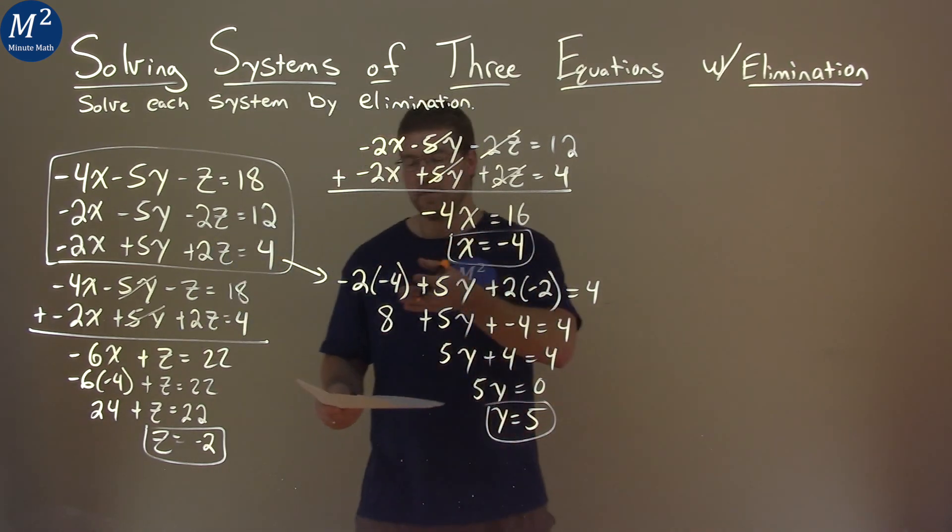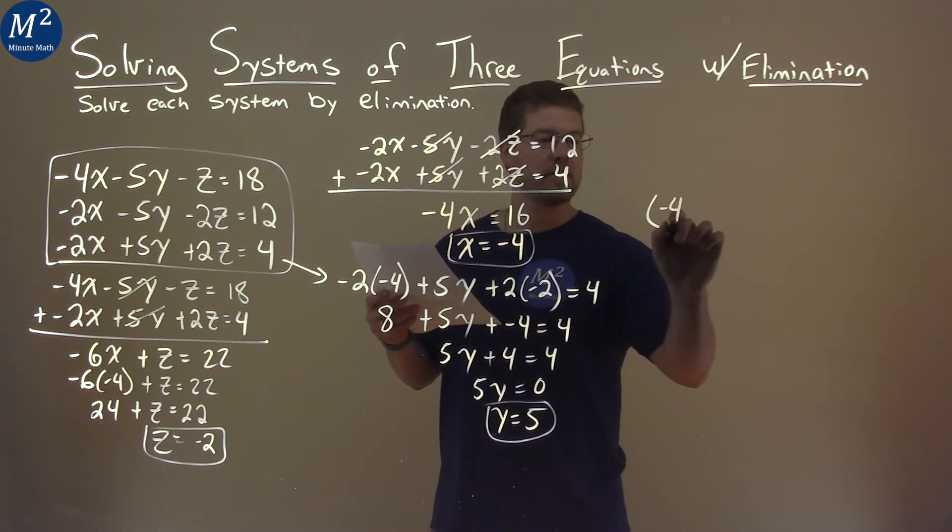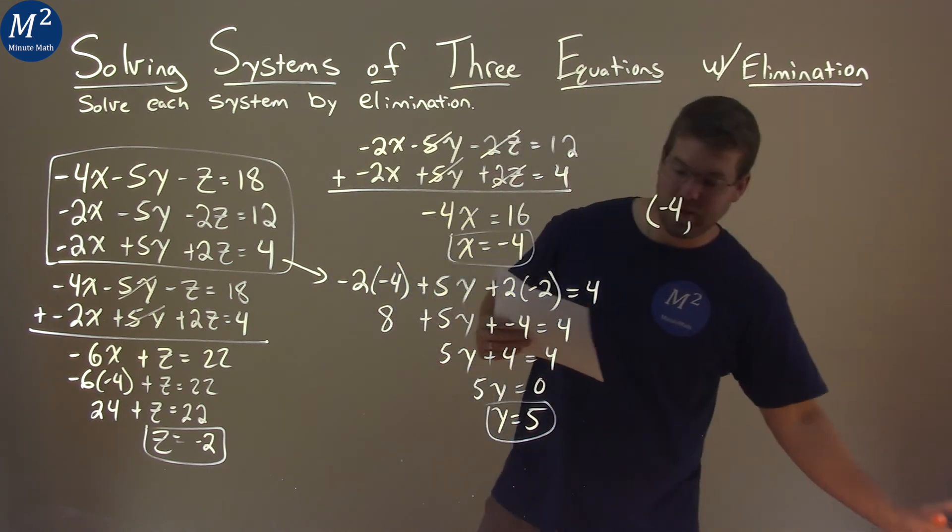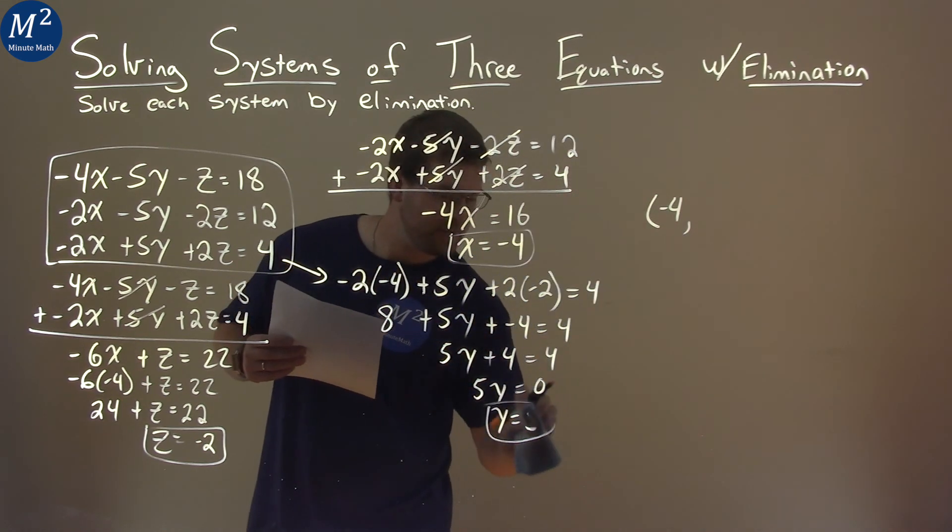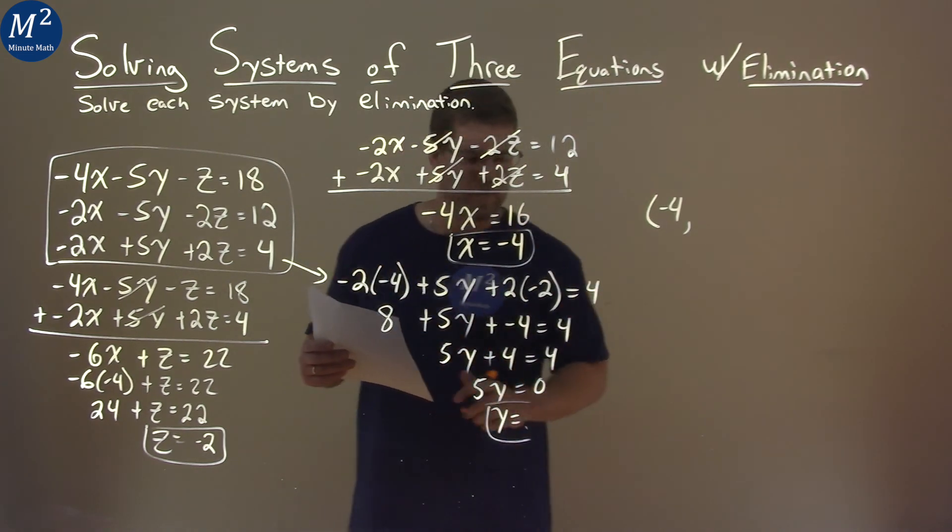So we actually have the answers for each one of our variables. We can write it as a single statement. Negative 4 for the x, 0 for the y, oh sorry, almost messed up there. If you caught that, that's what happens sometimes, you get ahead of yourself. Okay, I caught it. If you caught it, let me know down in the comment section below.